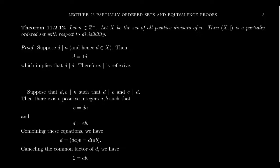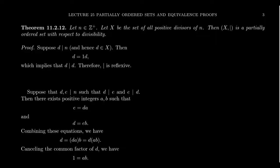Let's first check that divisibility is a reflexive relation. Take an arbitrary element d of X — since X is the set of positive divisors of n, d divides n. To show it's reflexive, I need to show that d divides d. By definition of divisibility, I need d to equal something times d, and the natural candidate is 1. Notice d = 1 × d, and that shows d divides d. So divisibility is a reflexive relation.